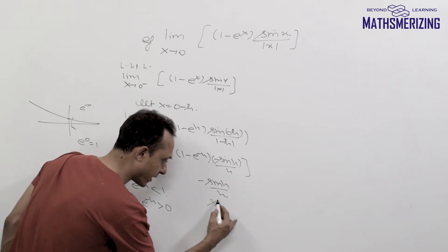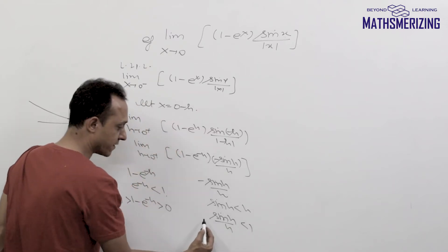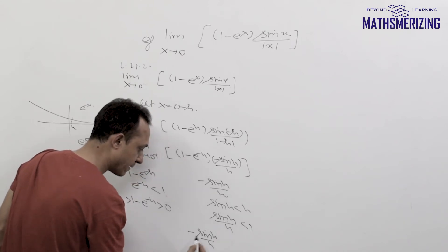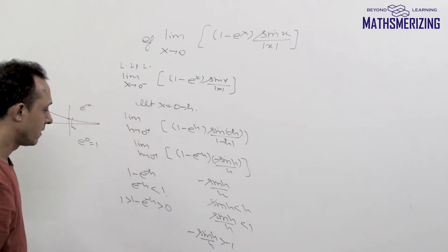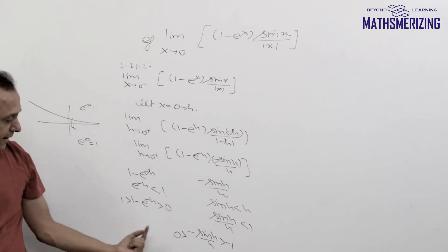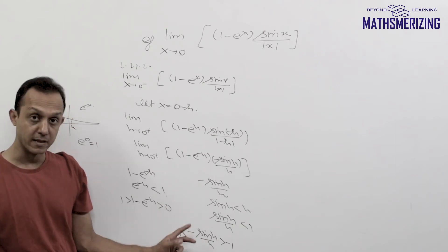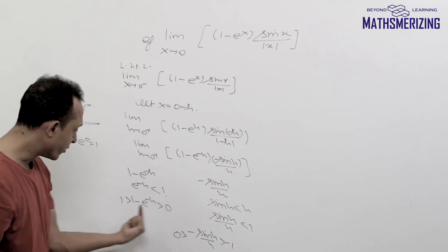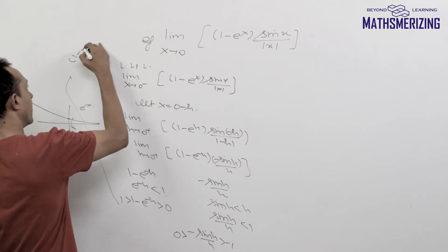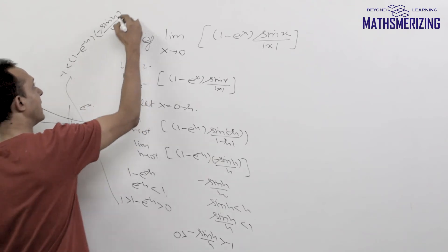For the second factor, sin h upon h is less than 1, so minus sin h upon h is greater than minus 1 but less than 0. So I have two expressions: one lies between 0 and 1, and the other lies between minus 1 and 0. One is positive and the other is negative, so their product is negative. Multiplying them, the result of (1 minus e to the power minus h) times (minus sin h upon h) will lie between minus 1 and 0.